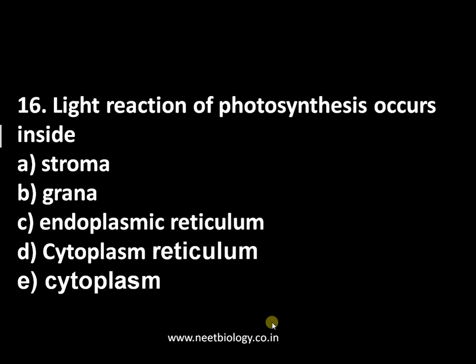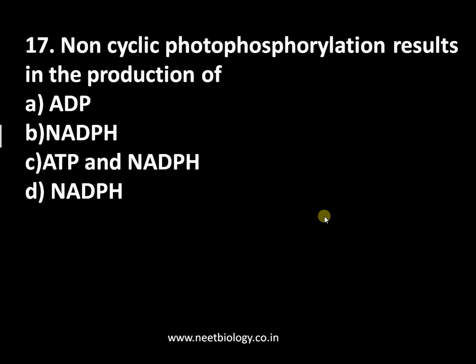Question number sixteen: light reaction of photosynthesis occurs inside — option A: stroma, option B: grana, option C: endoplasmic reticulum, option D: cytoplasmic reticulum, option E: cytoplasm. The answer is grana. Light reaction occurs in the grana of chloroplast, specifically in the thylakoid membrane, whereas dark reaction occurs in the stroma, and photolysis of water occurs in the thylakoid lumen.